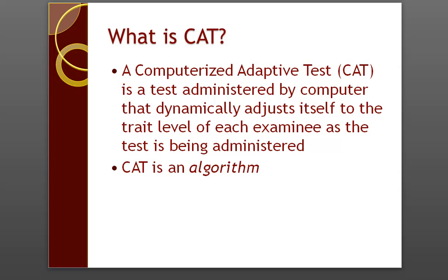What is CAT? A computerized adaptive test is a test that is dynamically administered by a computer, which adjusts itself to the trait level of each examinee as the test is being administered. So this means that after each examinee answers an item or set of items, the computer will perform some calculations and provide them with new items or a single item that best matches them and the goals of the test. Because there are computer calculations going on here, CAT is an algorithm — it's designed to follow principles of computer algorithm in addition to utilizing psychometric equations.